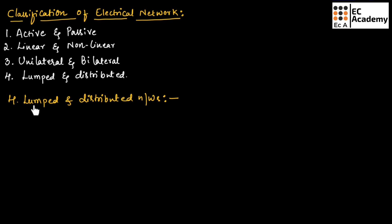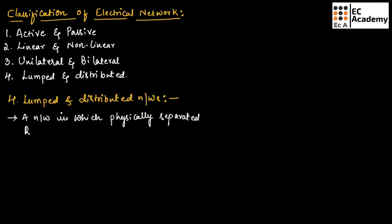Next, let us understand lumped and distributed networks. A network in which physically separated R, L, and C can be represented is known as a lumped network. Most of the electrical networks are lumped networks.